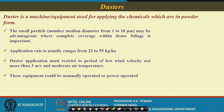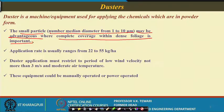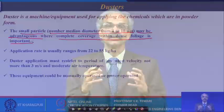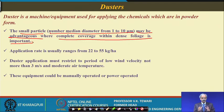The small particles with a mean diameter of about 1 to 10 micrometers are advantageous where complete coverage within the foliage is important. The diameter of the powder particles varies from 1 to 10 micrometers. It has to reach every location in the foliage and canopy of the plant. The application rate is generally 22 to 55 kg per hectare. This is the amount generally used when it has to be given only in powder form.